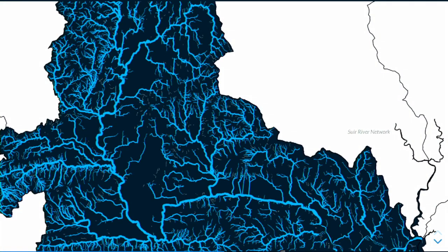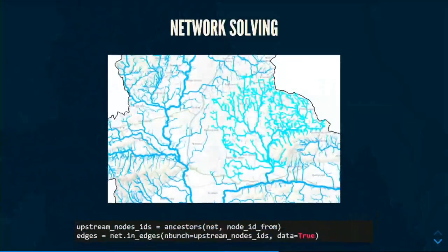In terms of what I've been using it for over the last few years: in Ireland we've been creating river networks, joining together all of the river segments. Once they're in a nice graph format, you can do things like apply stream order. In this example it's applying the Strahler stream order, so you can work out basically the size of the river as you go from upstream to downstream.